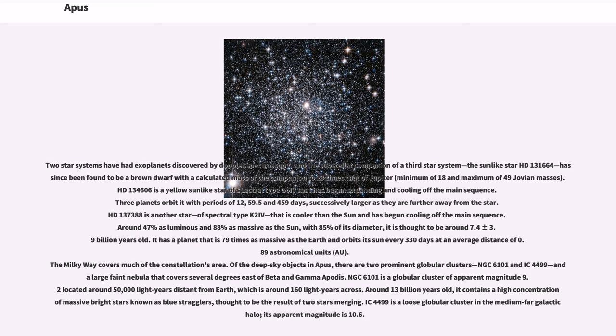Two star systems have had exoplanets discovered by Doppler spectroscopy, and the substellar companion of a third star system, the Sun-like star HD 131664, has been found to be a brown dwarf with the calculated mass of the companion to 23 times that of Jupiter, minimum of 18 and maximum of 49 Jovian masses. HD 134606 is a yellow Sun-like star of spectral type G6 IV that has begun expanding and cooling off the main sequence. Three planets orbit it with periods of 12, 59.5 and 459 days, successively larger as they are further away from the star.